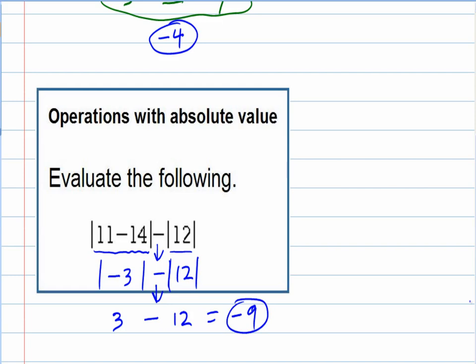So, our evaluation of this operation that involves a couple of absolute values, again, it actually ended up being a negative number. Negative 9.